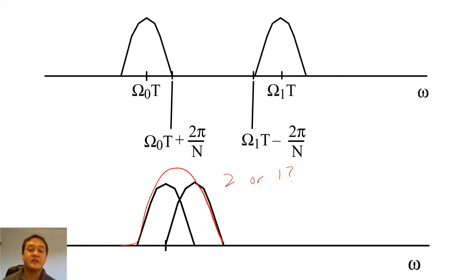The ability to distinguish the DFT peaks of two cosines is called the resolution of the system.